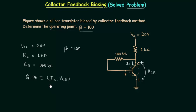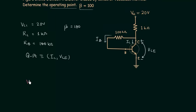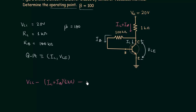First I will calculate the value of collector current IC, and for this we need to calculate the value of base current IB. I will apply Kirchhoff's voltage law in the input loop. We have Vcc minus the current through resistance RC — which is IC plus IB — multiplied with 1 kilo ohm, minus IB multiplied with 100 kilo ohms.